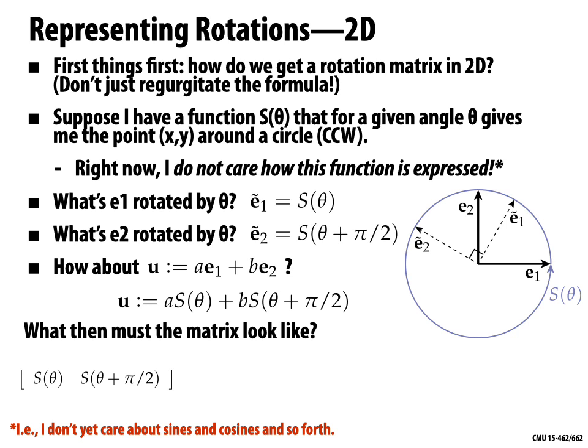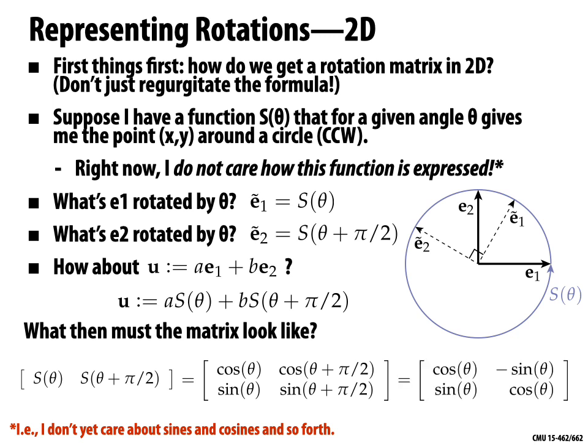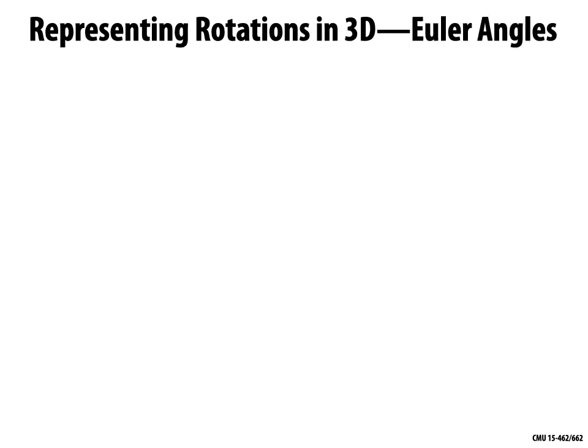So we get the usual rotation matrix. Given that setup, we can ask: how do we express rotations in 3D? One idea is we already know how to do rotations in 2D, so why not simply apply rotations around the three axes X, Y, and Z? This is a very common starting point for thinking about 3D rotations — a scheme called Euler angles.